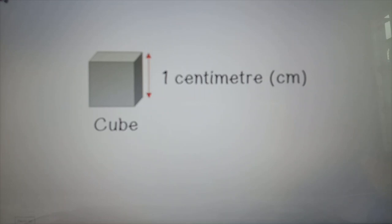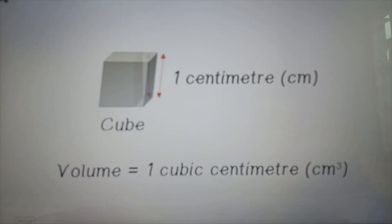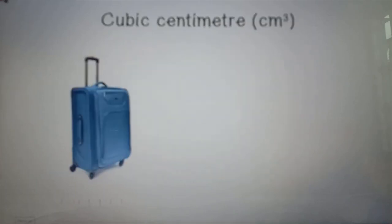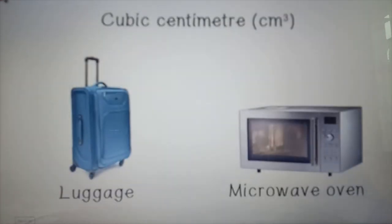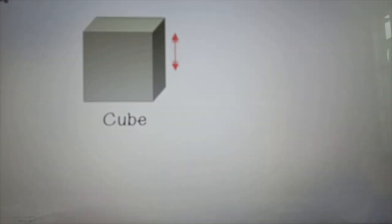A cube with size of 1 centimeter has a volume of 1 cubic centimeter. Examples of objects measured in cubic centimeters are luggage and ovens.